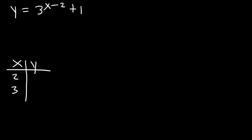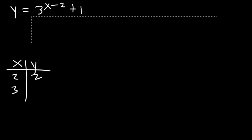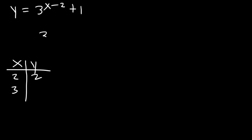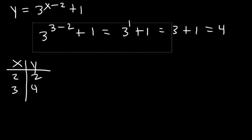When x is two: 3^(2-2) + 1 = 3^0 + 1 = 1 + 1 = 2. When x is three: 3^(3-2) + 1 = 3^1 + 1 = 3 + 1 = 4. So those are the points of interest: (2, 2) and (3, 4).